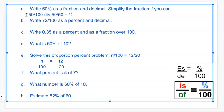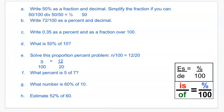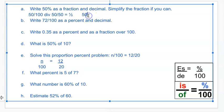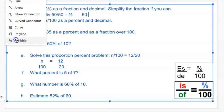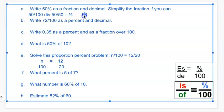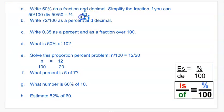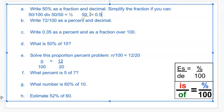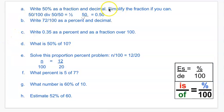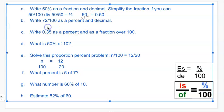And then the decimal, you just take 50, remove the percent, and then you add a decimal after the last digit. And then you move that decimal one, two places. And then that would be 0.50. You always put a zero in front of the decimal to make it proper math.